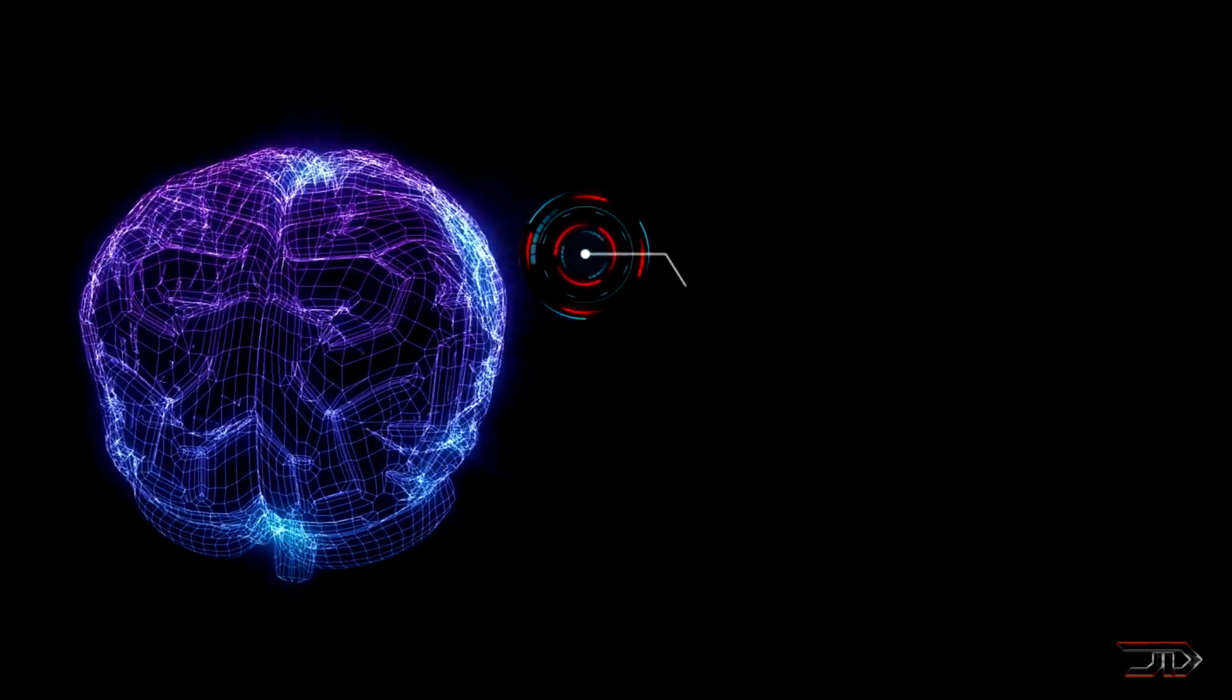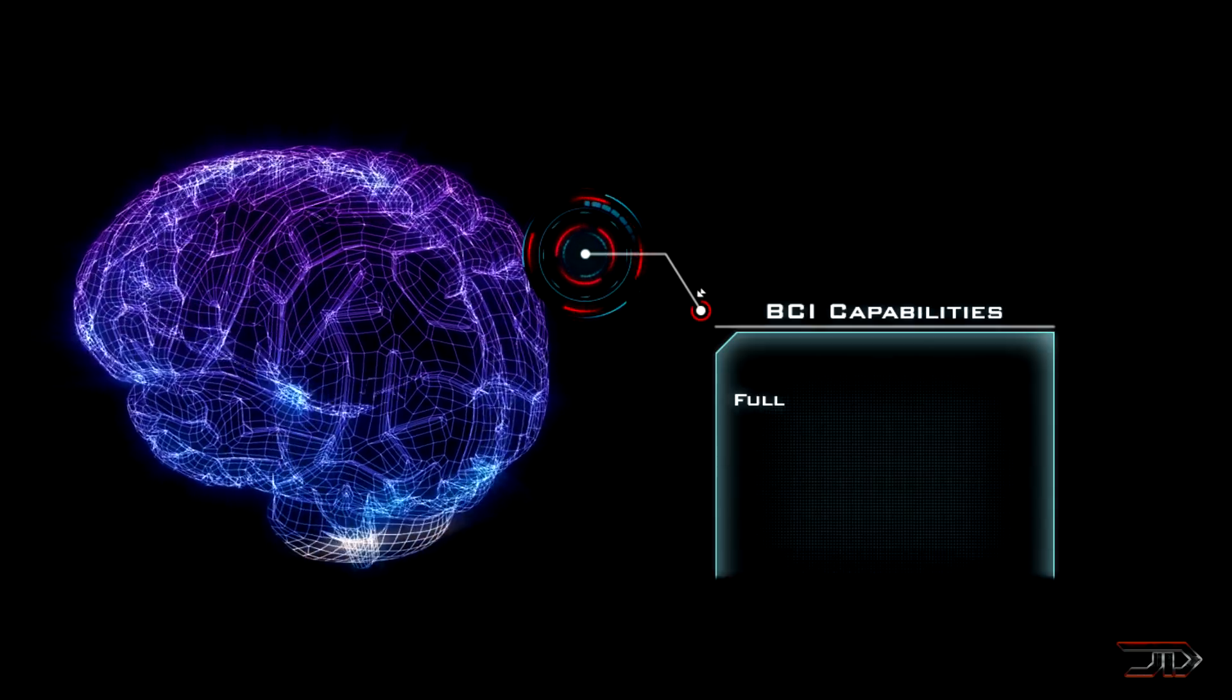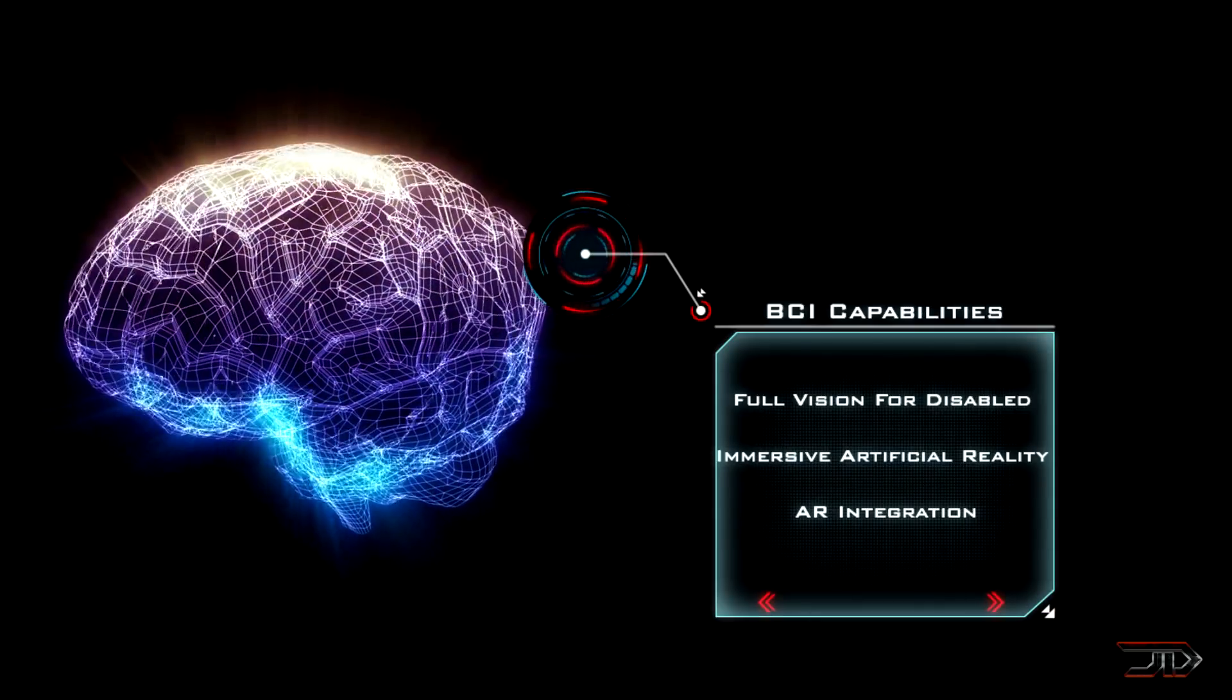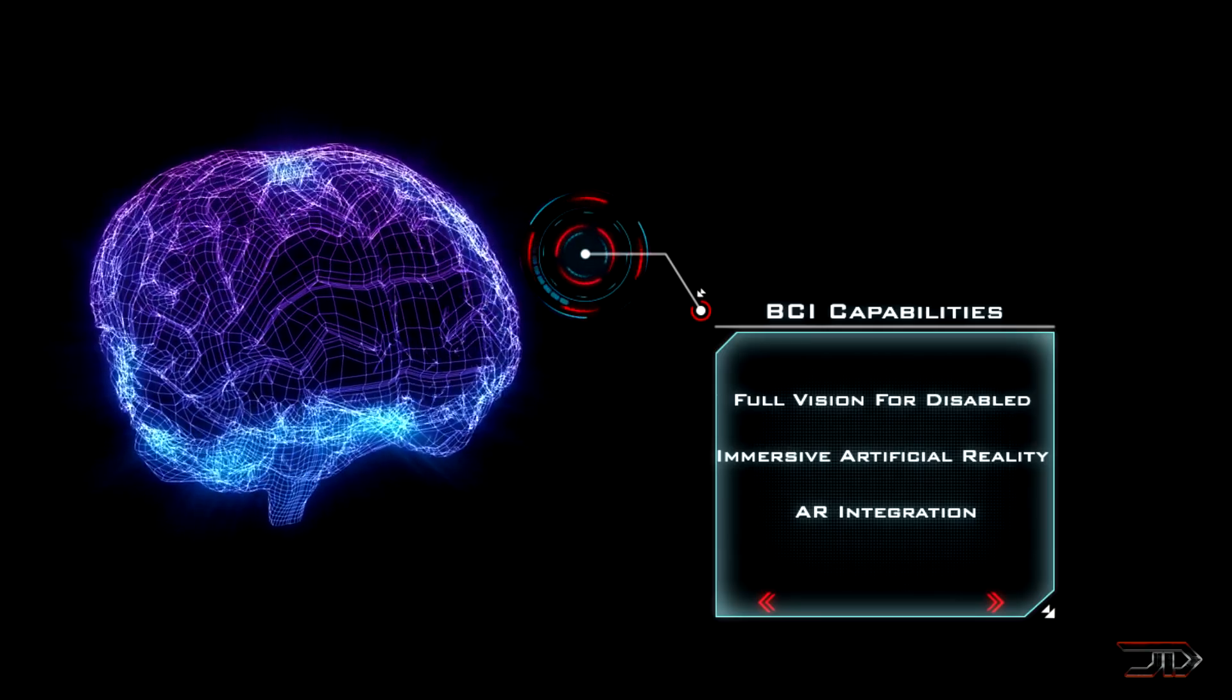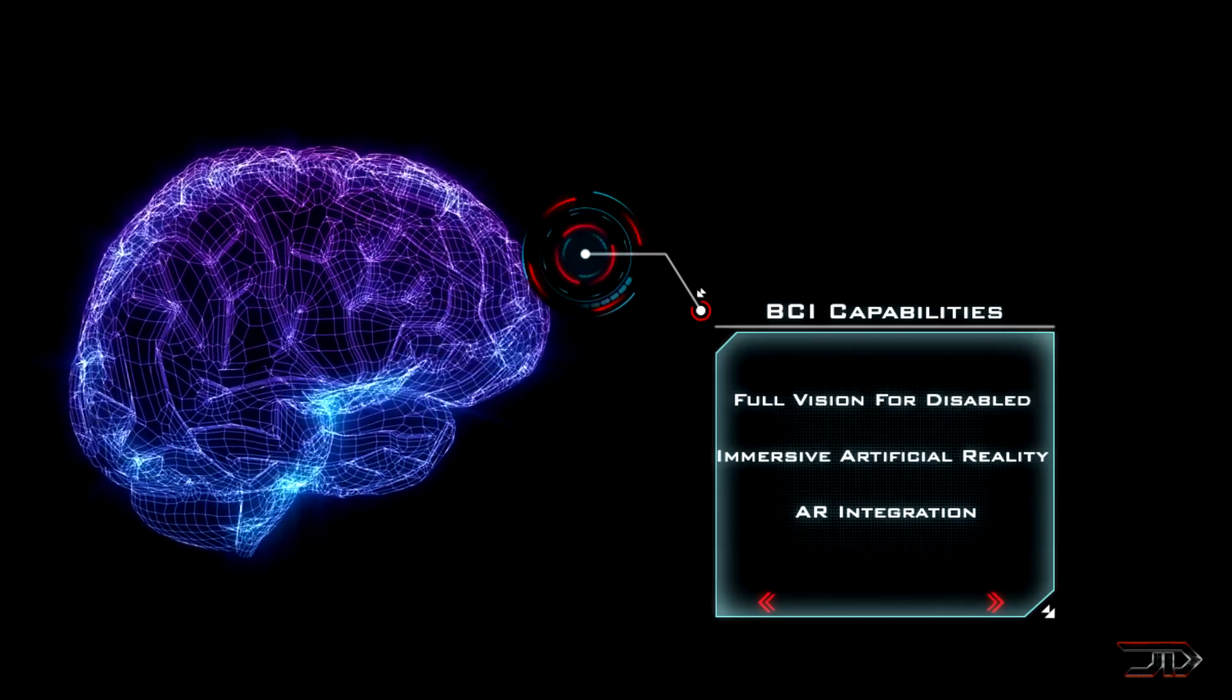The current implant can roughly produce 10 by 10 pixel images which translates into basic images such as letters or a sidewalk. It may be possible to offer 60 by 60 pixels with multiple electrodes and this would allow the patient to have full unobstructed vision.